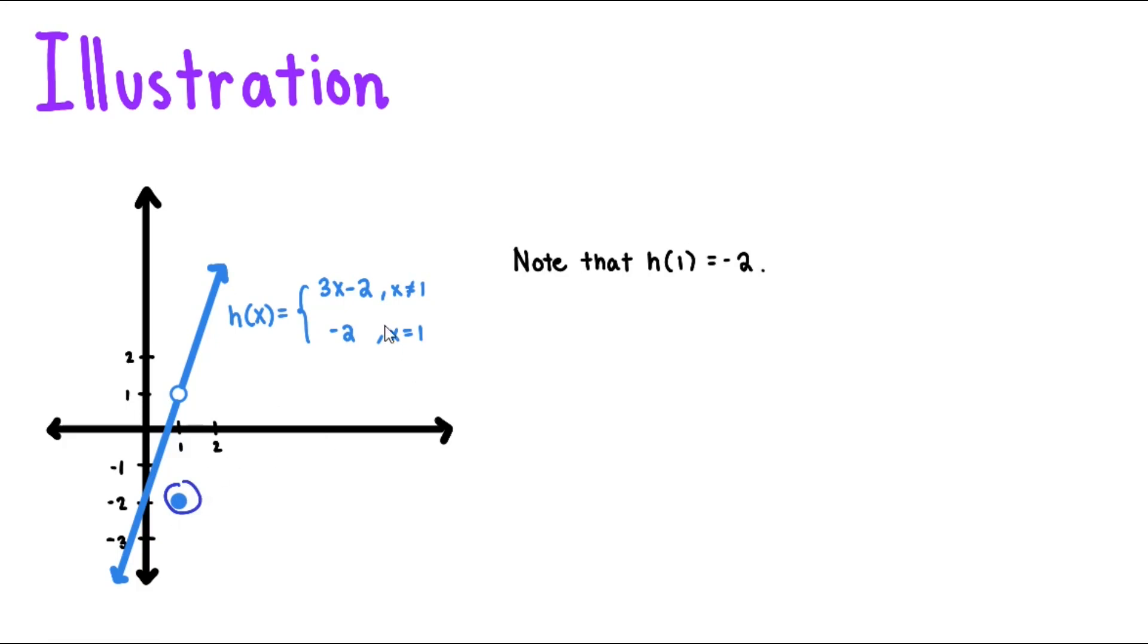But if we consider x not equal to 1, then take note that we'll have h of x equals f of x equals 3x minus 2. Since 3x minus 2 is our first example, we know that from the first example, the limit of f of x as x approaches 1 is equal to 1.